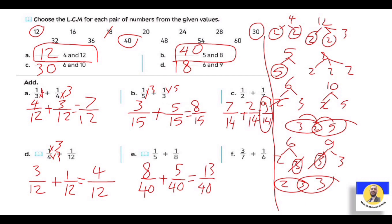Letter F: 3 over 7 plus 1 over 6. الـ seven والـ six - الاثنين prime numbers مفيش حاجة common بينهم. يبقى الـ LCM = 7 × 6 = 42. الـ seven بقت 42: عملنا × 6، يبقى 3 × 6 = eighteen. والـ six بقت 42: عملنا × 7، يبقى 1 × 7 = seven. So the answer: 18 + 7 = 25 over 42.